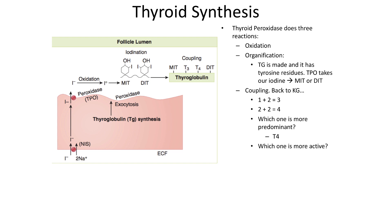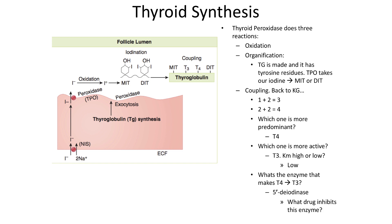T4 is more predominant, but T3 is more active. T3 has a low Km, meaning it has very high affinity — which also points to the fact that it is more metabolically active. The enzyme that converts T4 to T3 is 5-prime deiodinase.